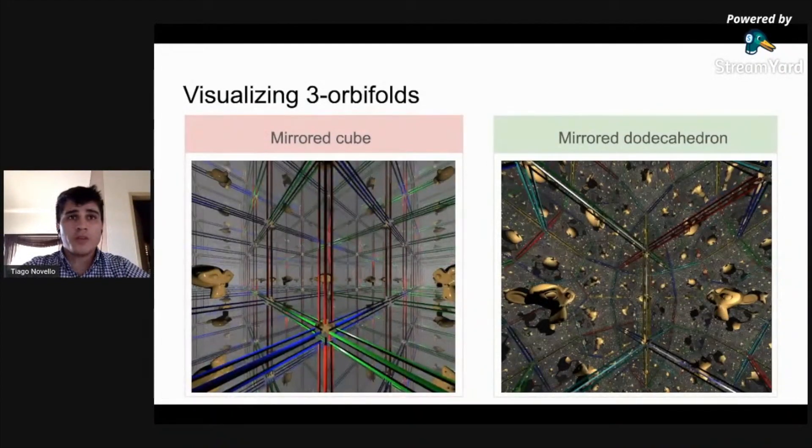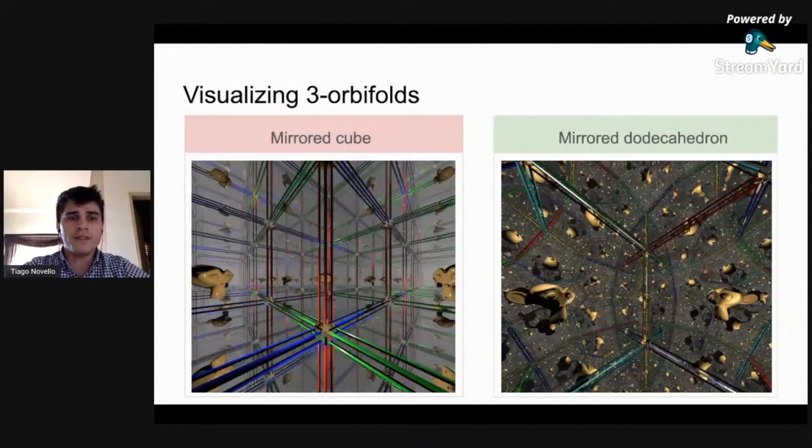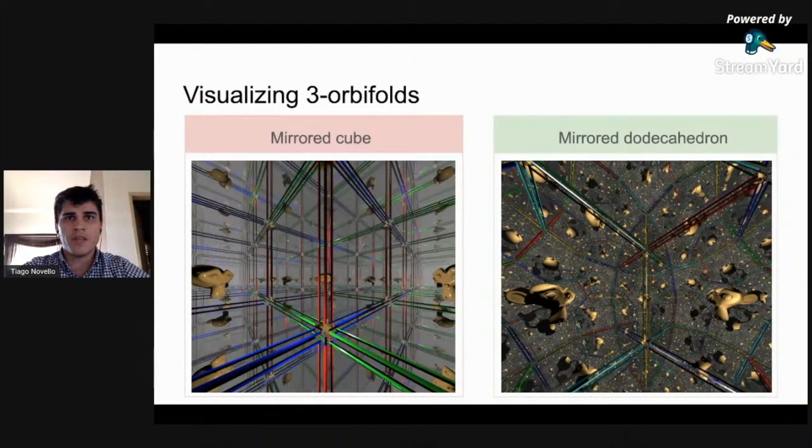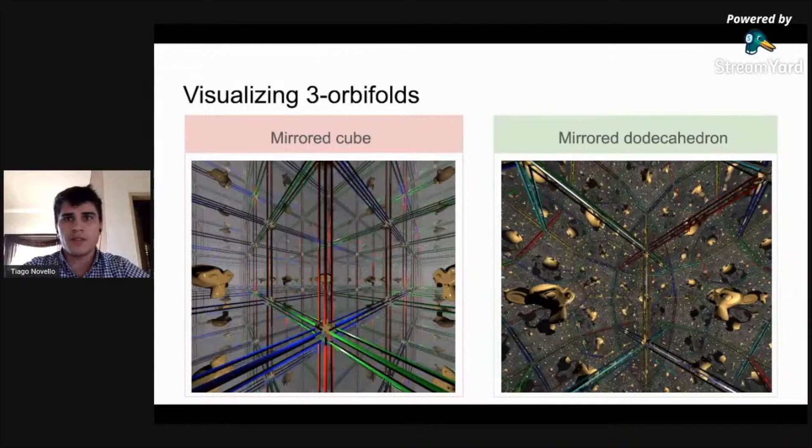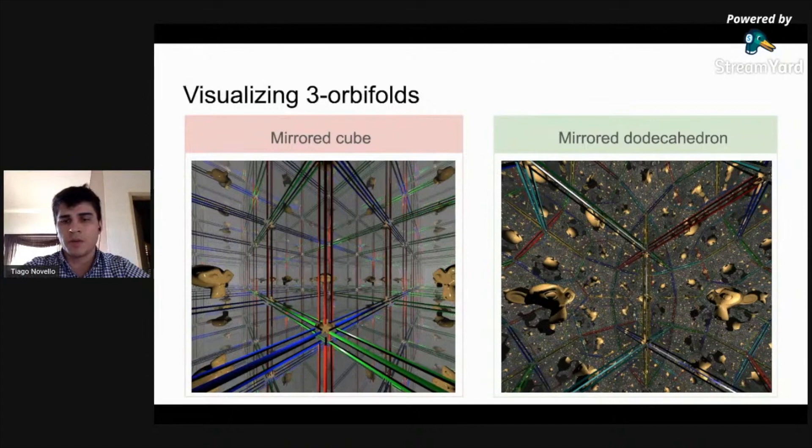We also provide examples of non-manifolds. On the left side, an immersive visualization of the mirrored cube, obtained by considering the faces of a cube to be perfect mirrors. On the right side, an immersive visualization of the mirrored dodecahedron, obtained by considering the faces of a hyperbolic dodecahedron to be perfect hyperbolic mirrors.